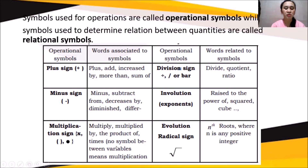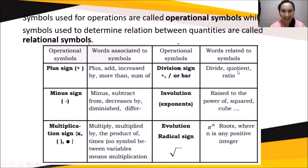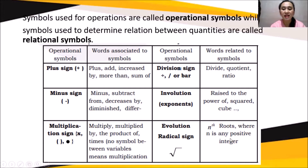No symbol between variables means multiplication. Another operational symbol is the division sign — the division symbol, slash, or bar — and the related words are: divide, quotient, or ratio. Another operational symbol is involution or exponents: raised to, the power of, squared, cubed, etc. And another is evolution, which is the radical sign — the nth root where n is any positive integer. These are examples we can use to answer learning task number one.